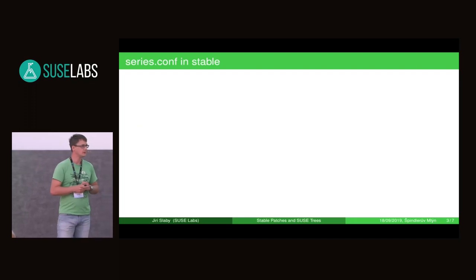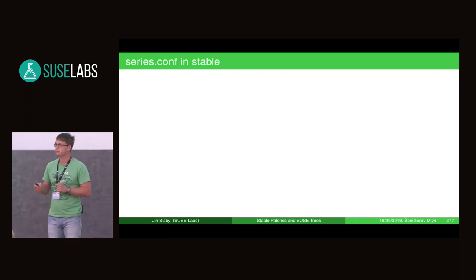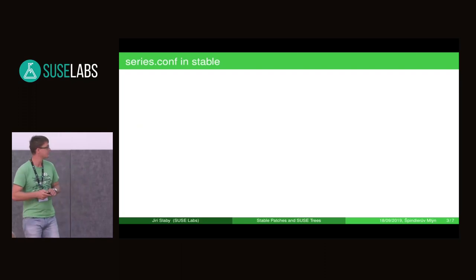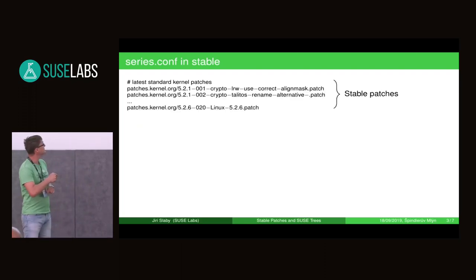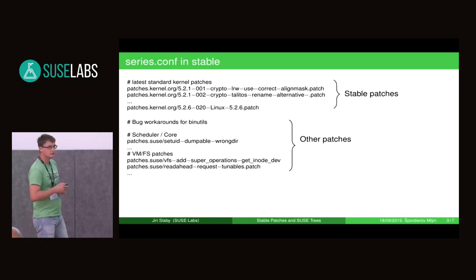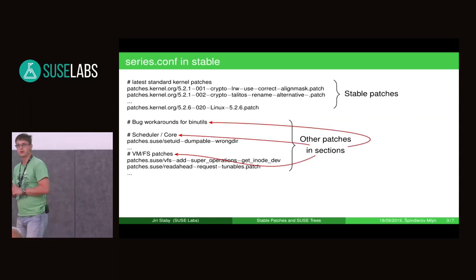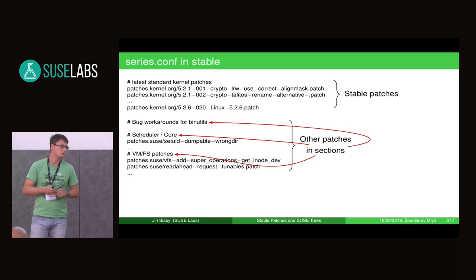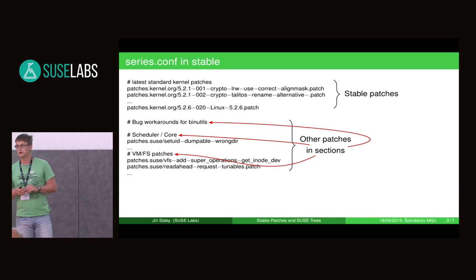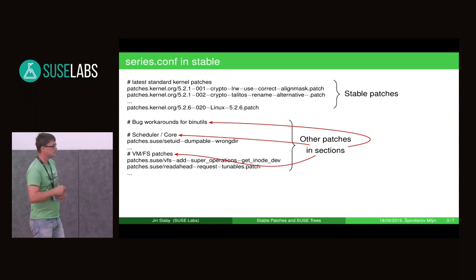Let's have a look at the series.conf file — what it looks like in stable and master branches. We have at the top of the series file stable patches which are taken from upstream. And then there are other patches which are from upstream or not, depending on the patch. They are divided into so-called sections. There are three sections here — this is only a logical dividing of the patches so that we can make any sense of it. Note that there are only a few patches in master and stable branches in this second part, so it's not much of a problem.